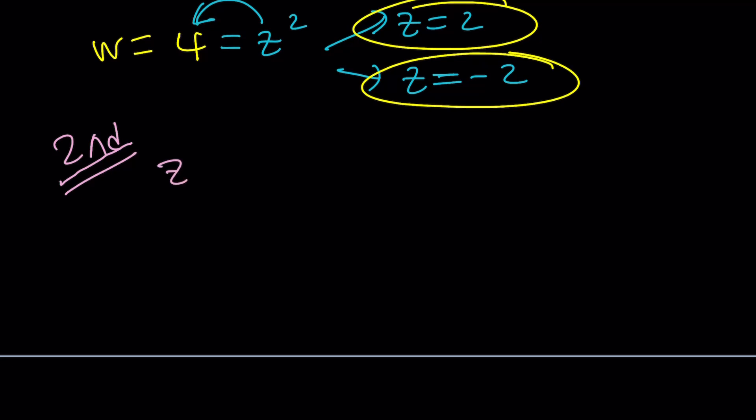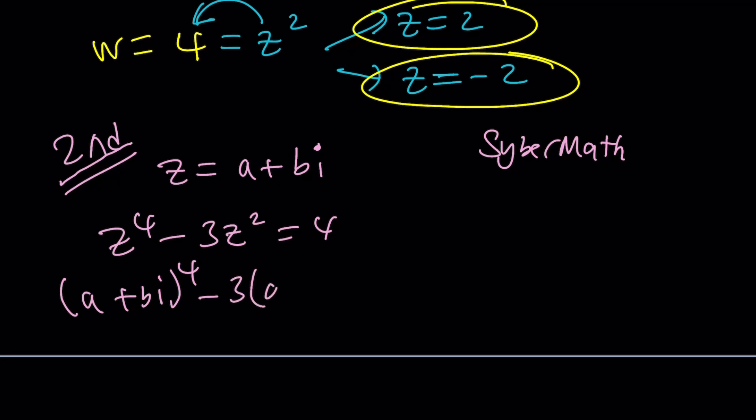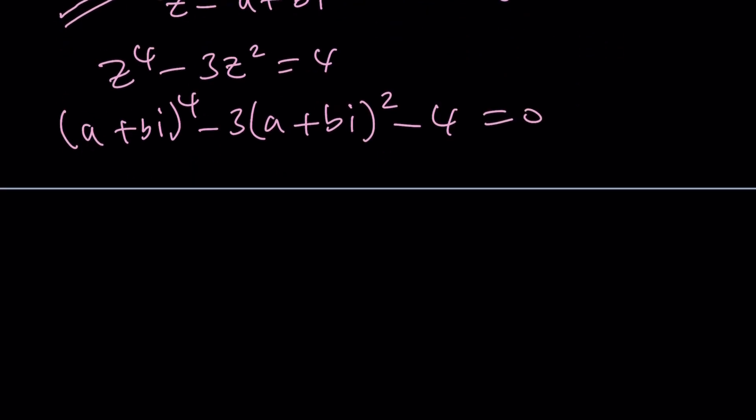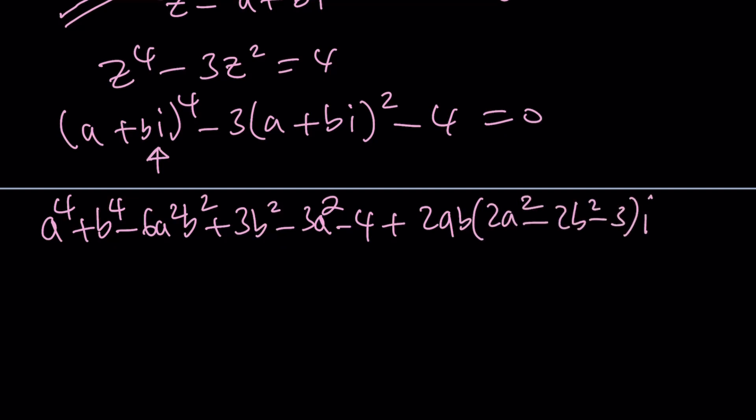Okay, second method is gonna use the name of this channel which is a plus bi, right? Z equals a plus bi. By the way I have another channel which is called Cyber Math. Go ahead and also check it out if you're not familiar with my other channel. All right great, so when you plug this in into z to the fourth minus 3z squared equals 4, you're going to get a lot of terms from the binomial theorem, right? So it's going to be expanding, and obviously now let's put 4 on the left hand side. So if you expand this you're going to get a to the fourth, b to the fourth, because i to the fourth is 1, so on and so forth, so many other terms. But we're going to have to separate the real and imaginary parts and I did the work for you so you don't have to worry about it.